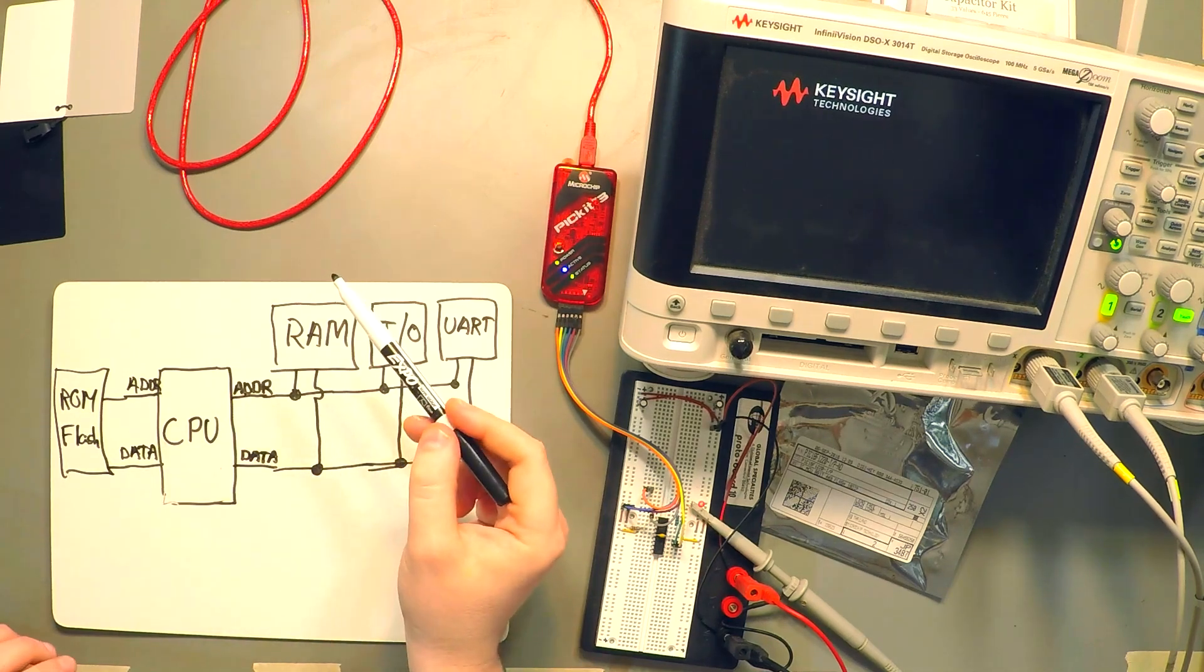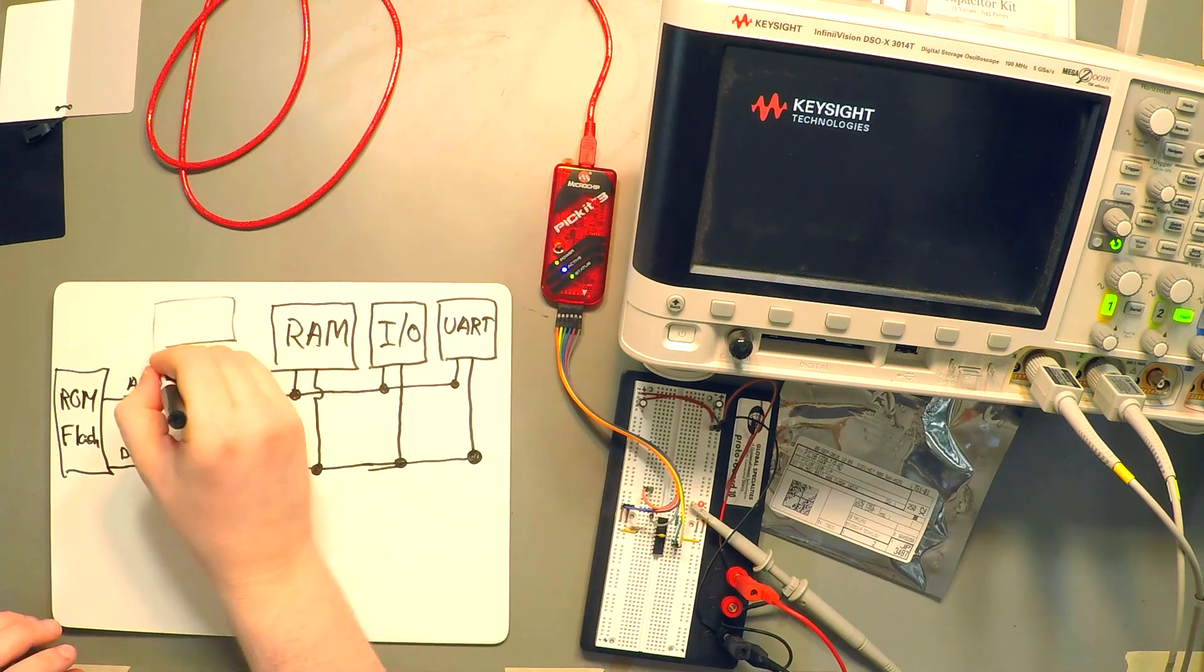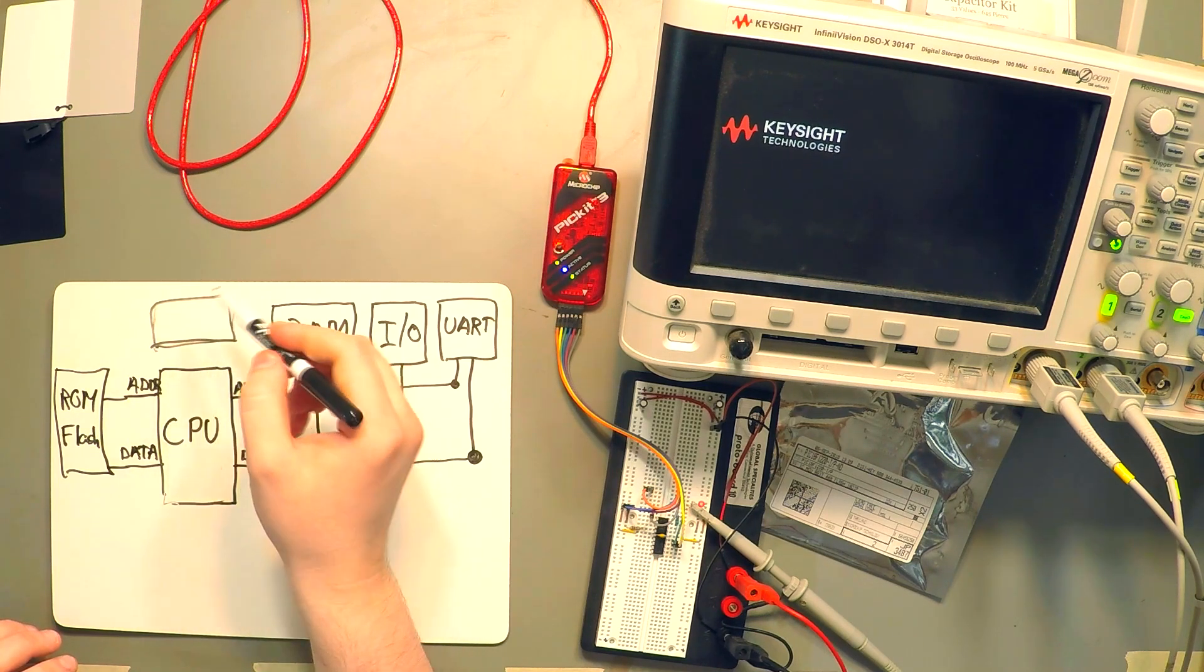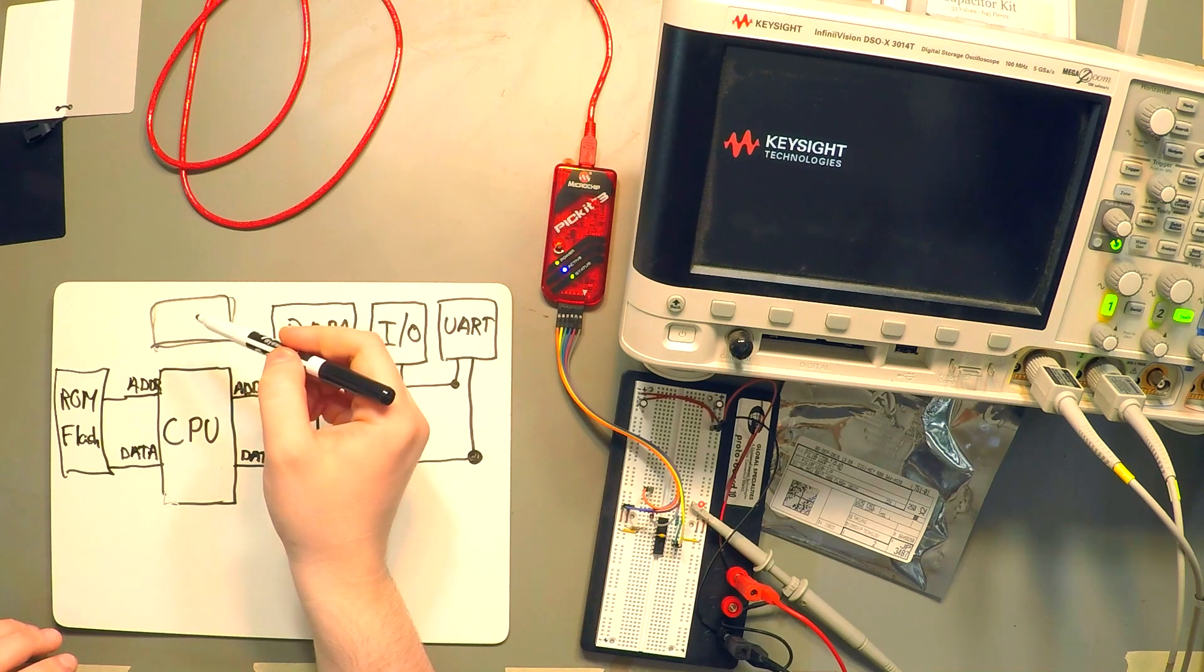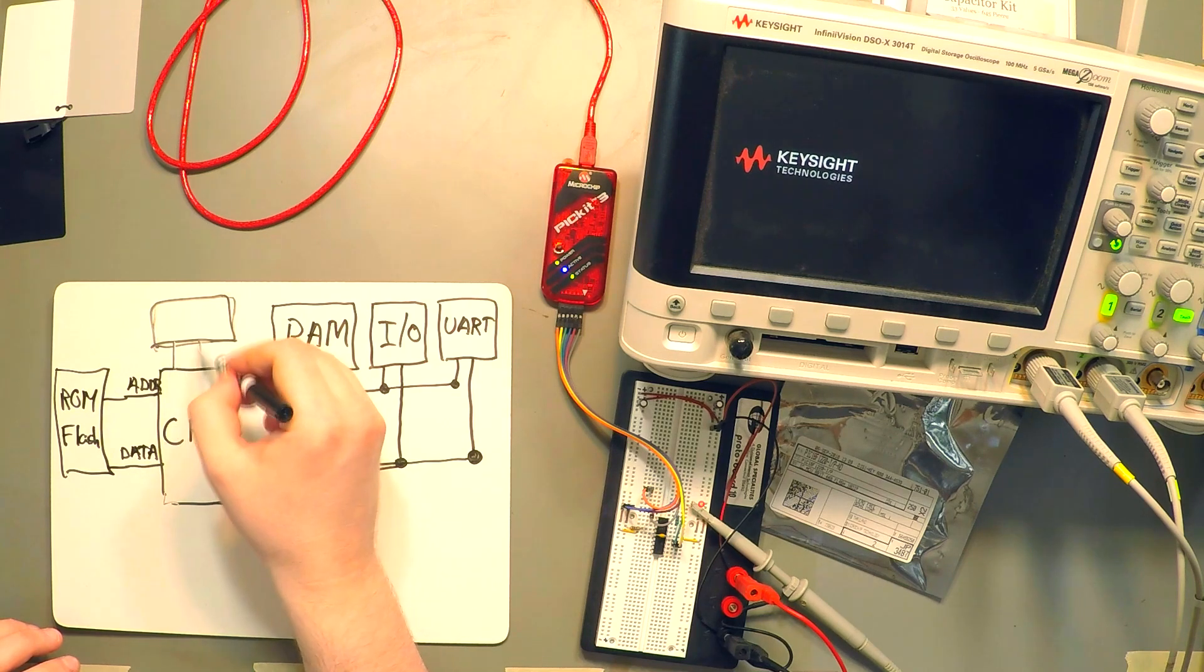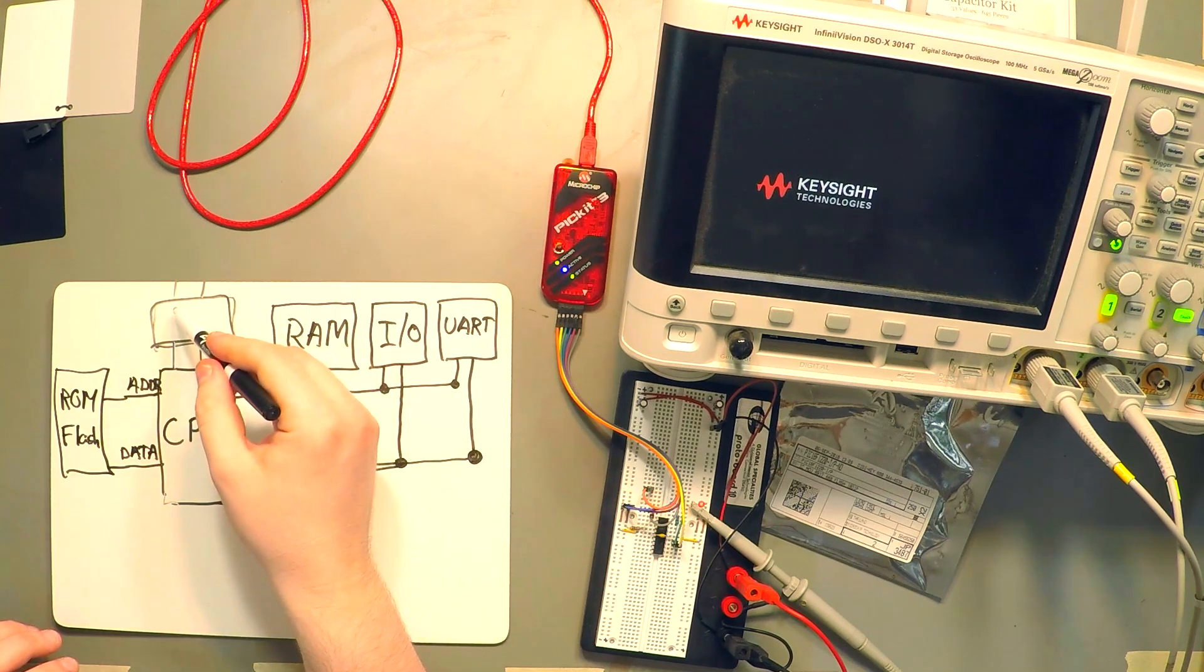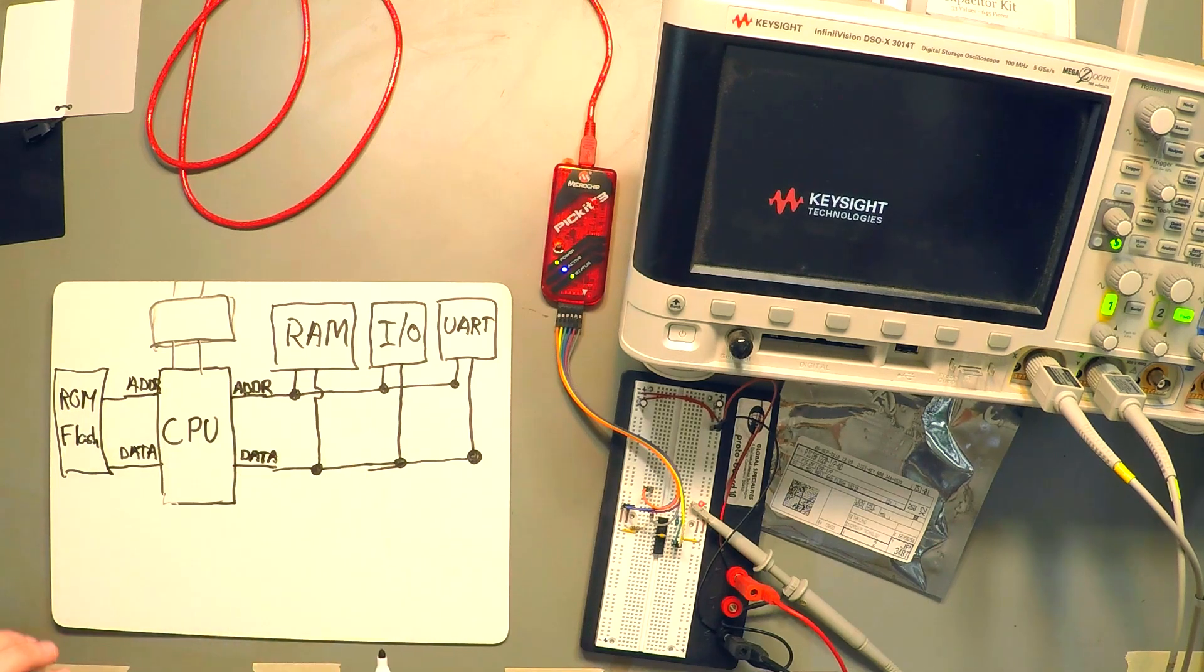Now, one thing I'm not showing here on this diagram is there's also going to be some components on the microcontroller that are going to be used for debugging and programming the microcontroller. So it may connect something like this and then this will go to the outside world. And that's actually how we're going to get our program into the flash or ROM memory on the microcontroller.